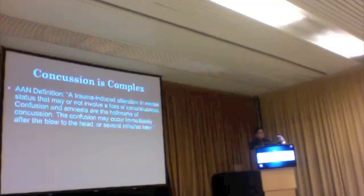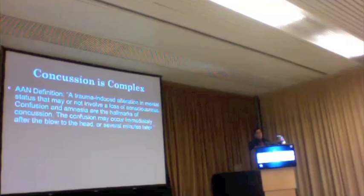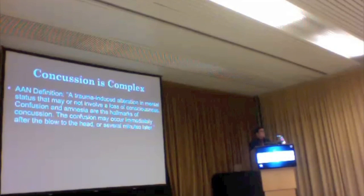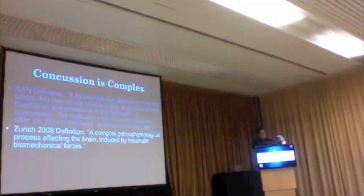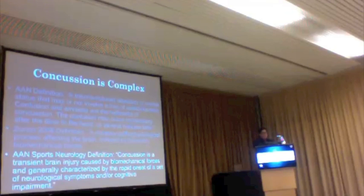Concussion is complex. The American Academy of Neurology defines it as a trauma-induced alteration in mental status that may or may not involve a loss of consciousness. This is important, and this year the guidelines will be moving away from graded types of concussion. Most concussions do not involve loss of consciousness. Zurich 2008 defines it as a complex pathophysiological process affecting the brain induced by traumatic biomechanical forces — very general, as they could not reach consensus.